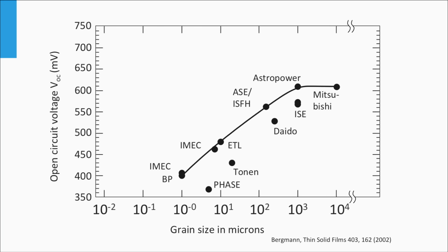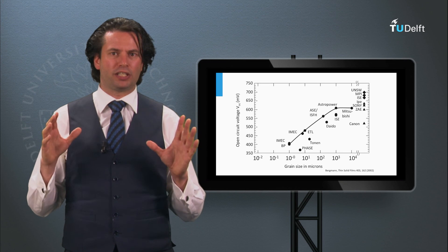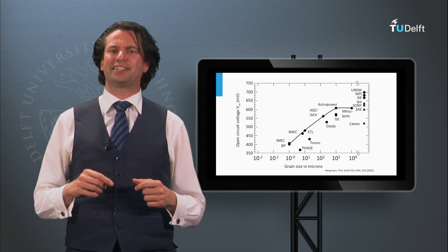In this figure from a paper by Bergman, we see the relation between the open-circuit voltage of various solar cells based on multicrystalline wafers and the average grain size of the multicrystalline silicon absorber layer. The larger the grain size, the longer the charge carrier lifetimes, the larger the band gap utilization, and the larger the open-circuit voltage. On the right, we see open-circuit voltages of solar cells based on monocrystalline silicon wafers. Since monocrystalline silicon has no grain boundaries, much larger open-circuit voltages can be obtained. The question now is how we make these types of silicon wafers — we will discuss that in the next block.